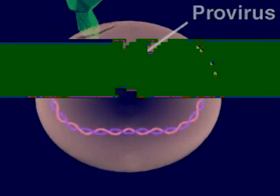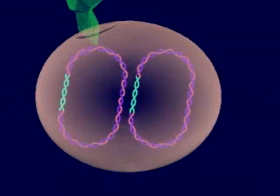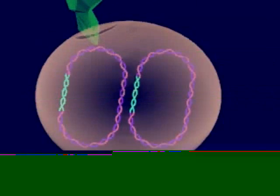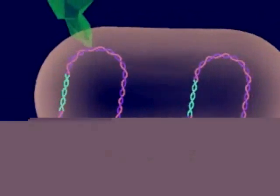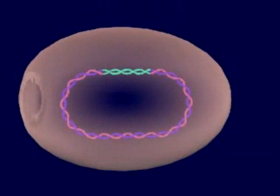During cell reproduction, the host cell copies the provirus genes along with its own DNA. The provirus is inactive at this time. When the cell divides, both the host genes and the provirus genes are passed on to the two daughter cells.